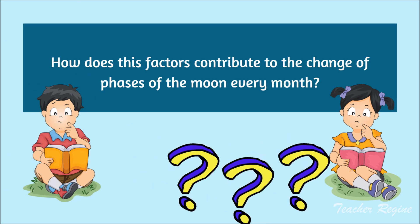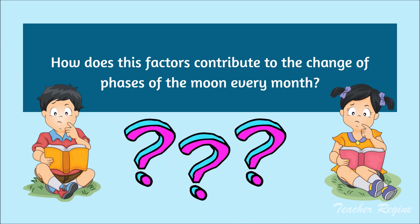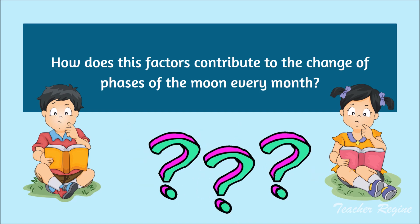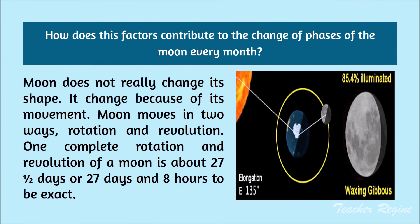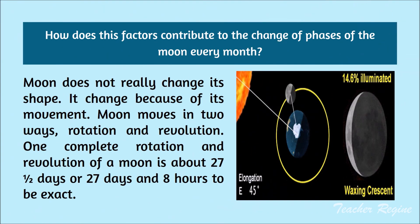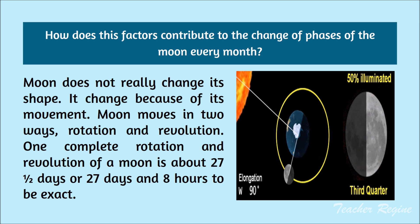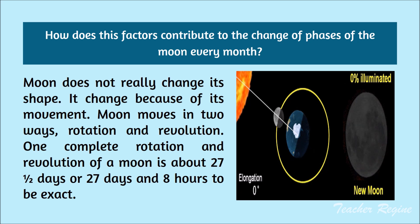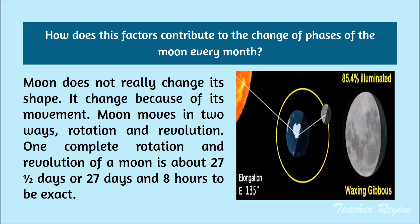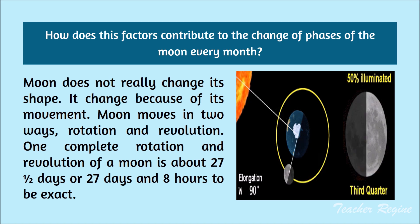How do these factors contribute to the change of phases of the moon every month? The moon does not really change its shape — it appears to change because of its movement. The moon moves in two ways: rotation and revolution. One complete rotation and revolution of the moon is about 27 and one-half days, or 27 days and 8 hours to be exact.